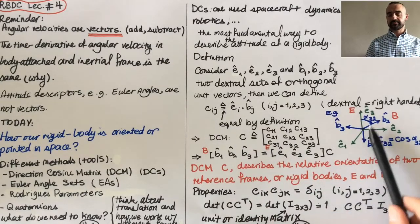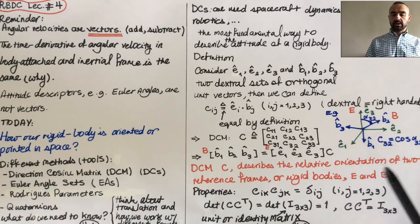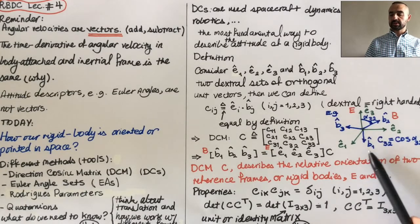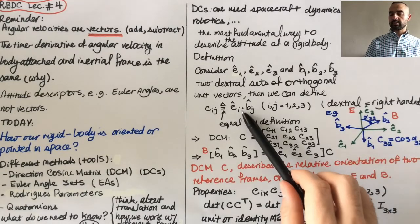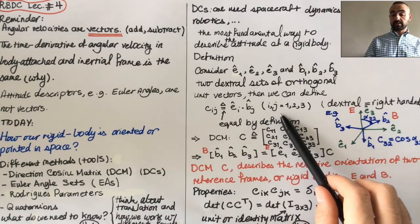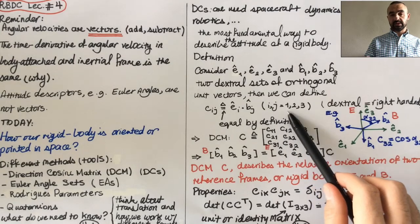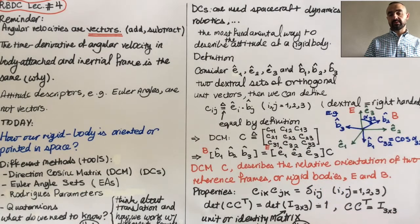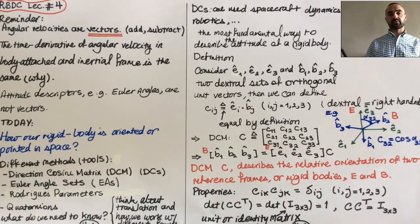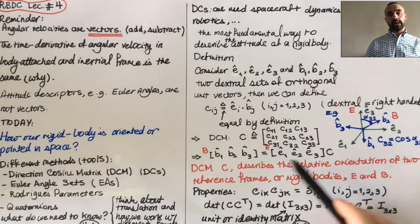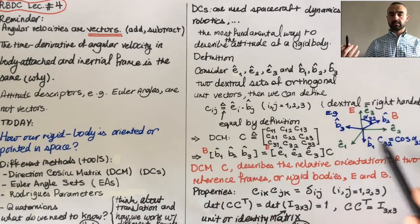How it works is, for example, if you think about these two frames, my E frame and my B frame, then this is a dot product between the two unit vectors. And i and j vary between one and three, one, two, and three, because we have three unit vectors to describe our reference frame.